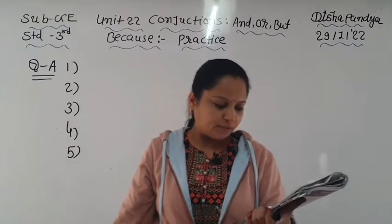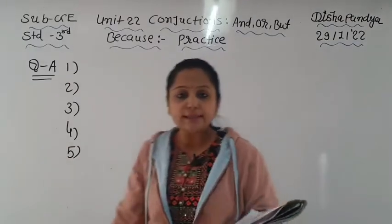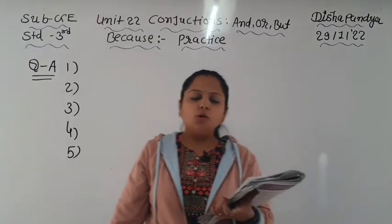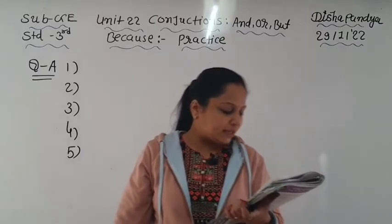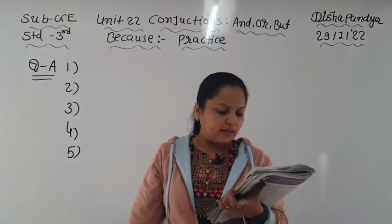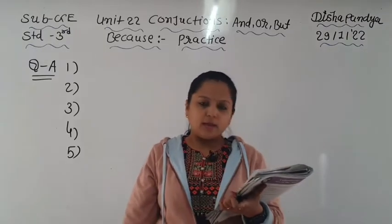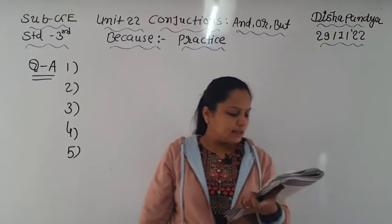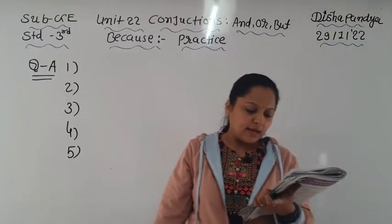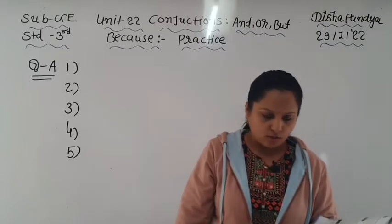Open your book and find page number 63. Question number A is: fill in the blanks with 'and', 'or', 'but', or 'because'. The first sentence is: 'I met Venkat blank, I did not meet his sister.'